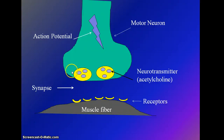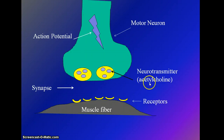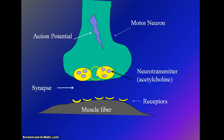At the end of the motor neuron are structures called synaptic vesicles, and they contain neurotransmitters. In the case of a motor neuron that stimulates a skeletal muscle fiber, that neurotransmitter is called acetylcholine. When the action potential gets down to the end, it will cause these synaptic vesicles to release acetylcholine.